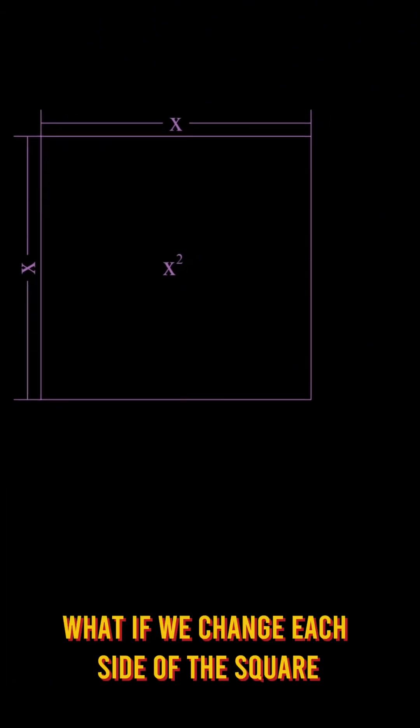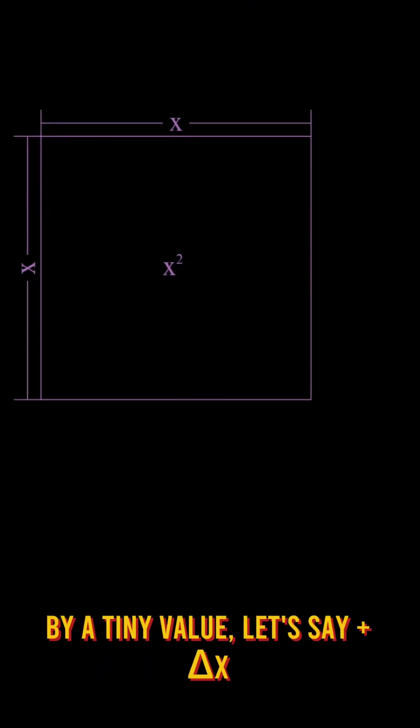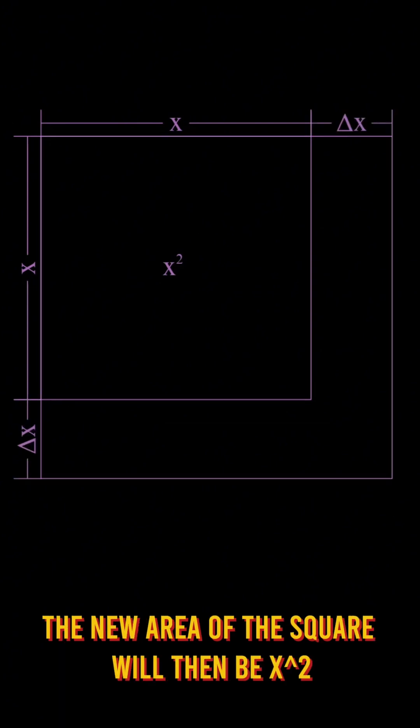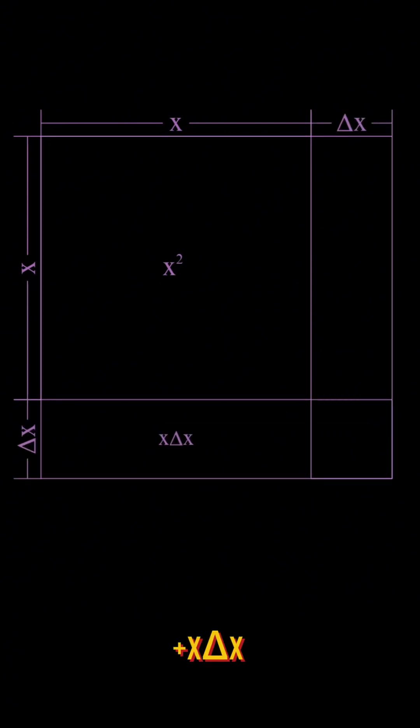What if we change each side of the square by a tiny value? Let's say dx. The new area of the square will then be x squared plus x dx plus x dx plus dx squared.